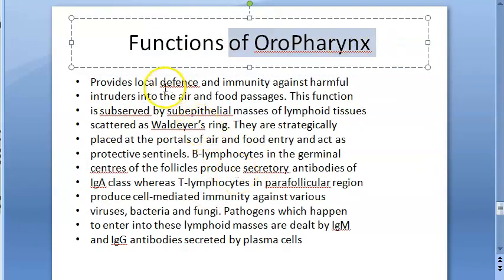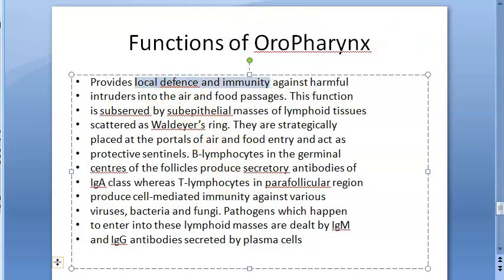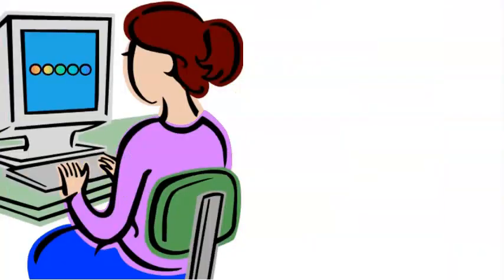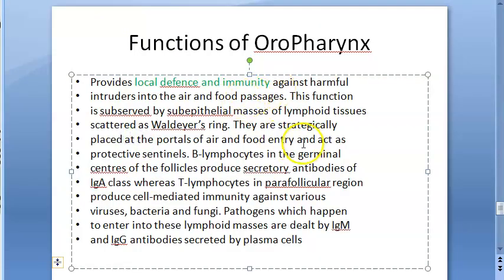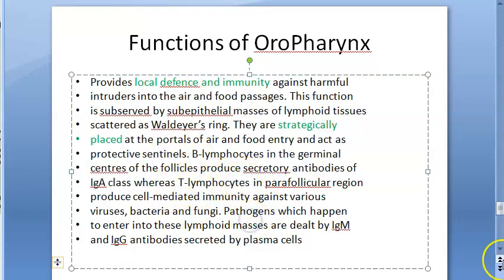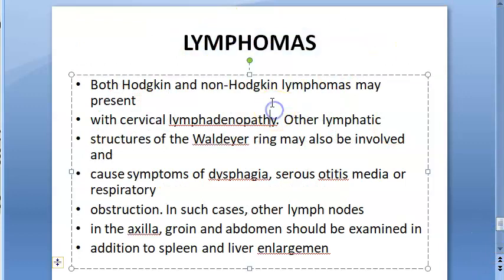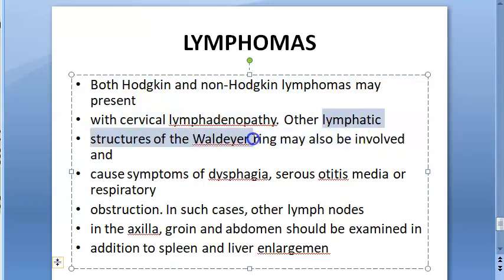The functions of the oropharynx include providing local defense and immunity against harmful intruders. Waldeyer's ring is strategically placed to catch invaders. B lymphocytes and T lymphocytes are present within these tonsillar structures, contributing to immune responses.